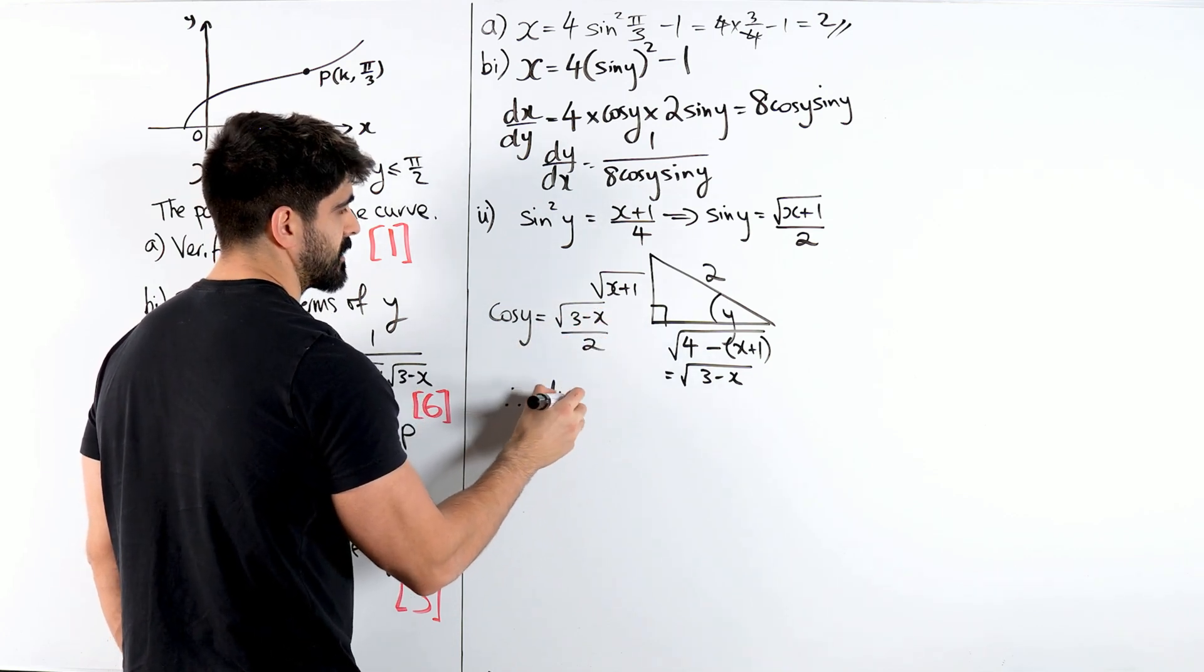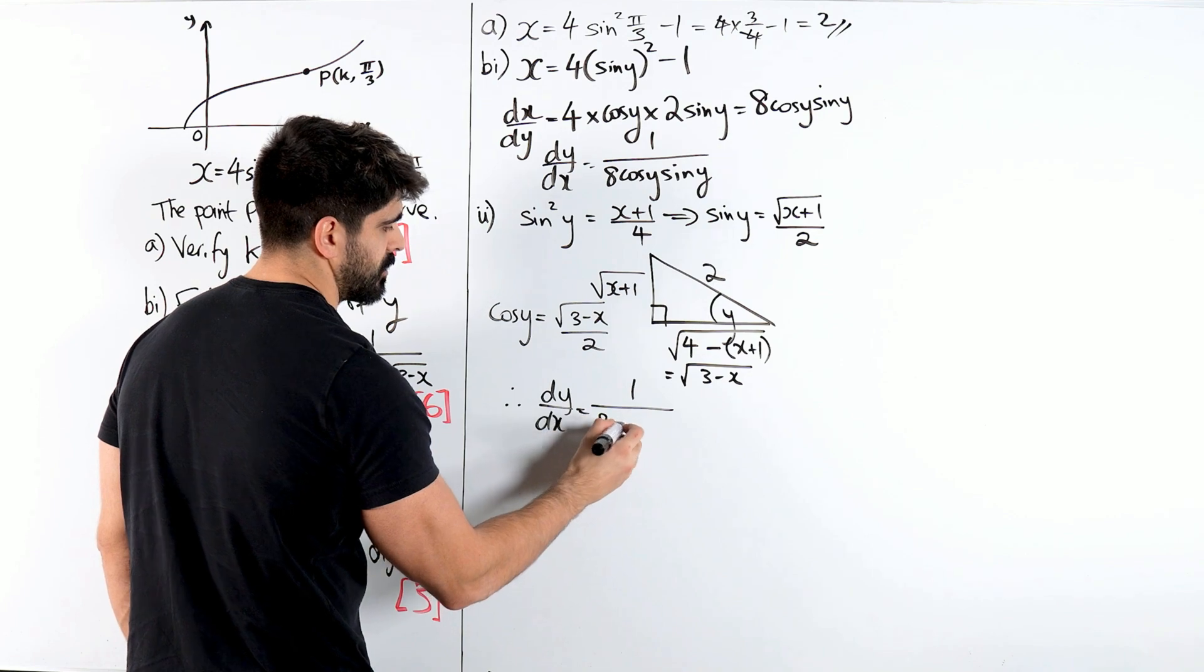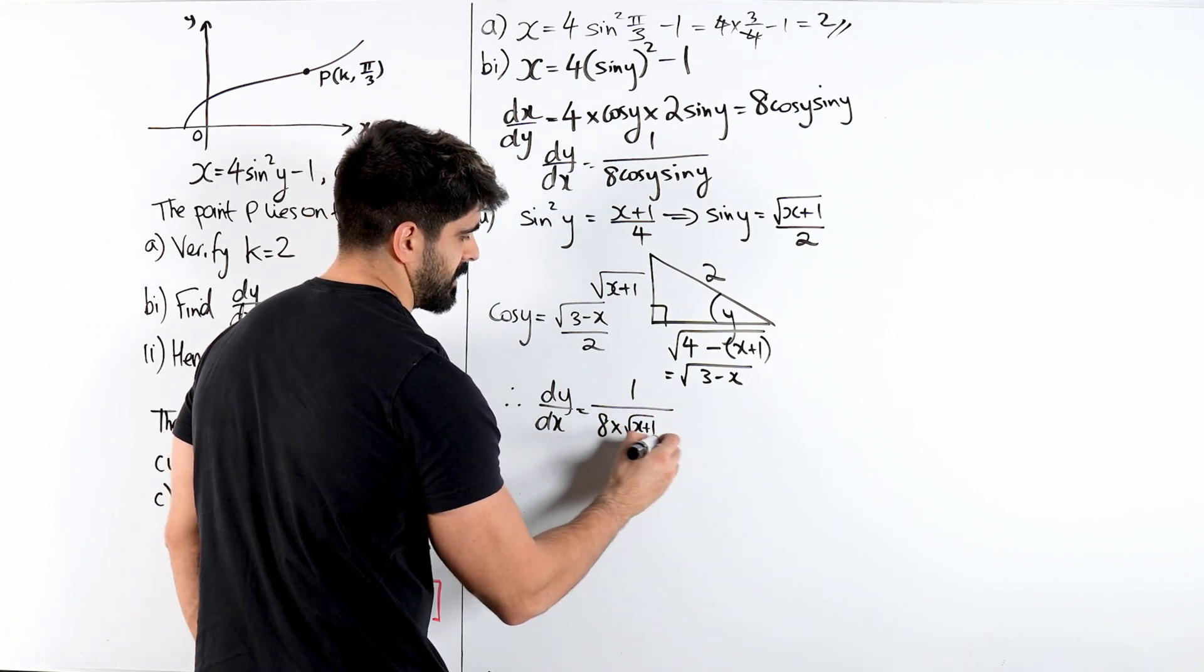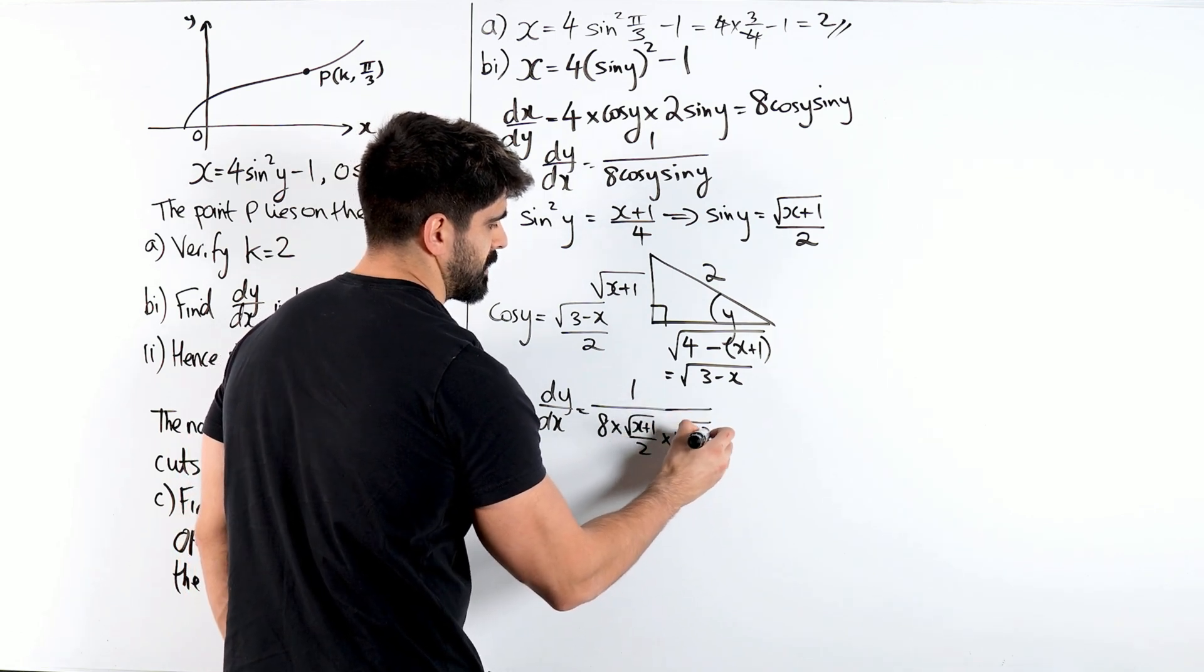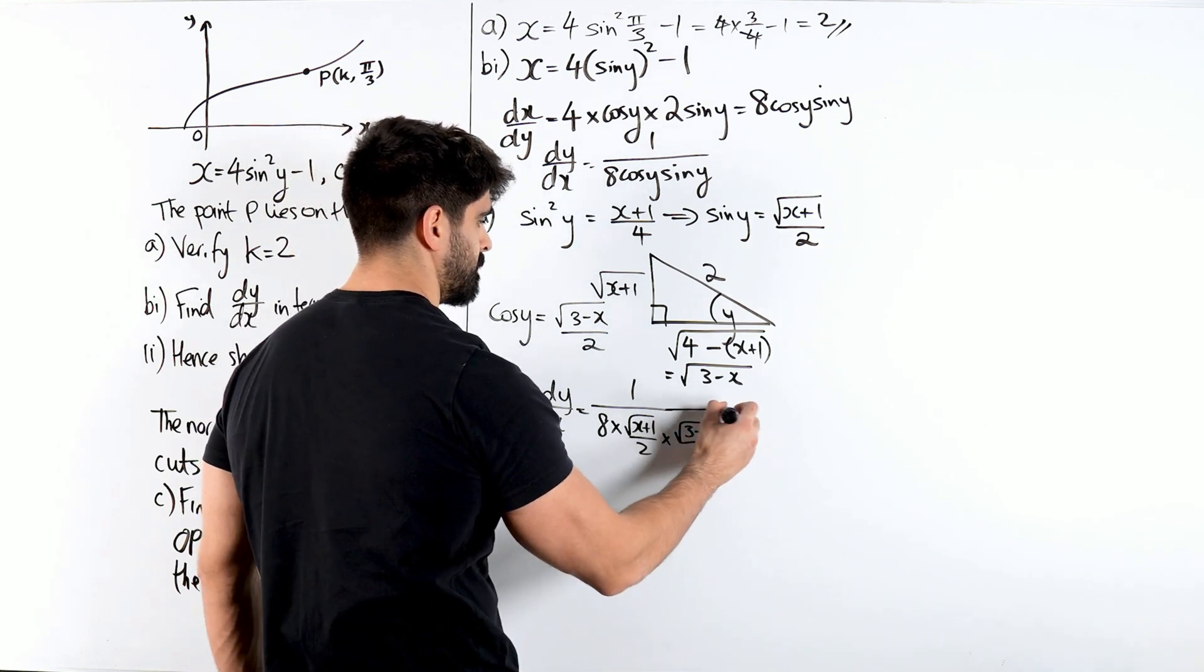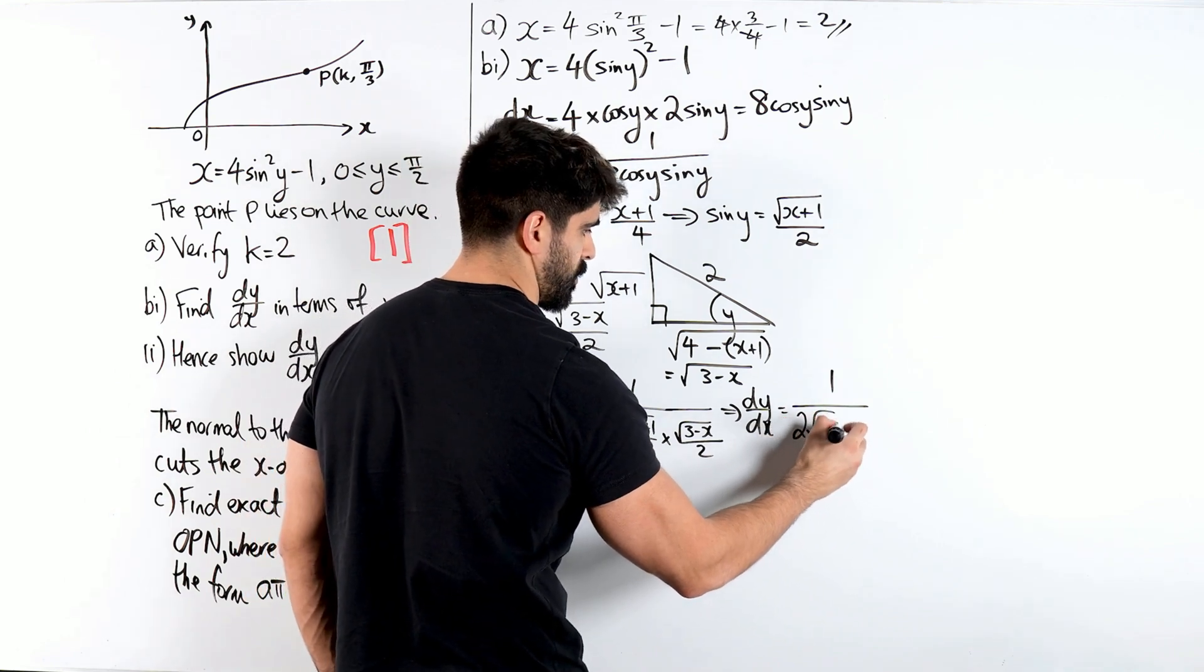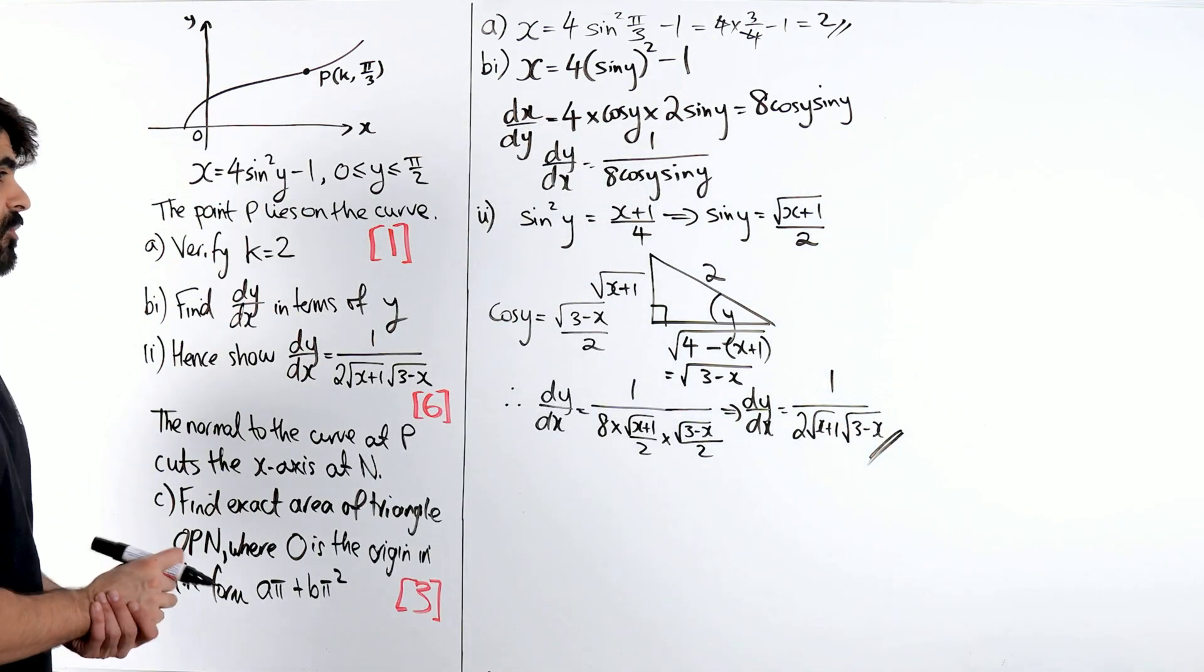So cos is a over h. Therefore dy dx is 1 over 8 lots of cos, let's do the other one first. So the 2's are 4, cancels the 8. So we get dy dx is 1 over 2 root x plus 1 root 3 minus x. And that's shown, cool.